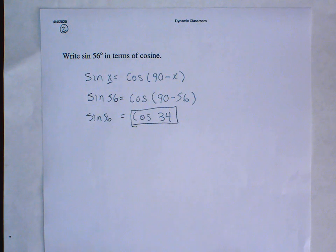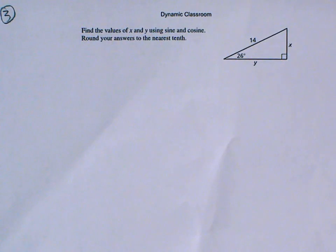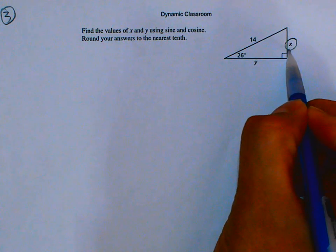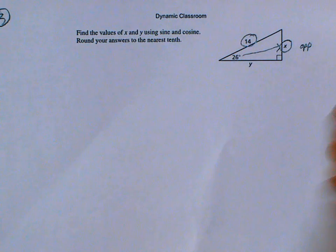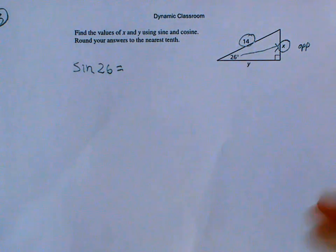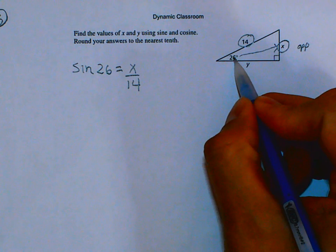Let me zoom in — example three is a little small. They want me to find the values of x and y. The question is: do I use sine or do I use cosine? It depends on what you're looking for. If I choose to solve for x first, what is the relationship between this angle and this side? It's the opposite. I know my hypotenuse. The only ratio that uses both the opposite and the hypotenuse is the sine ratio. So the sine of 26 degrees equals the opposite x over the hypotenuse 14.